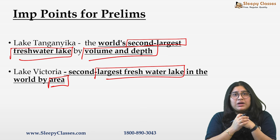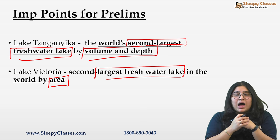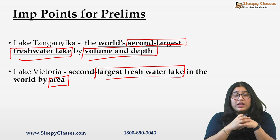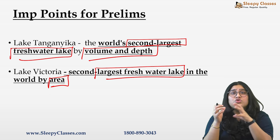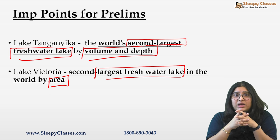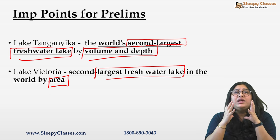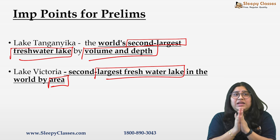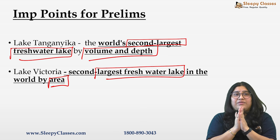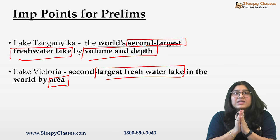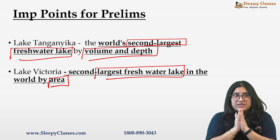तो अभी तक हमने देखा — बुरुंडी को surround करने वाले countries, और हमने Great Lakes के तीन lakes — Lake Tanganyika, Lake Victoria and Lake Malawi — को भी समझा है।